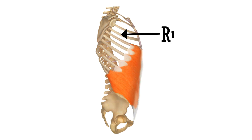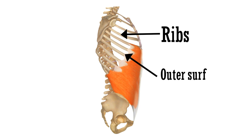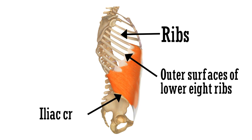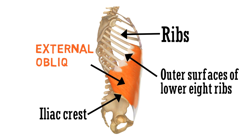As you can see, these are the ribs, and these are the points of origin — the outer surfaces of the lower eight ribs. This is the point of insertion, the iliac crest. This muscle is the external oblique muscle.